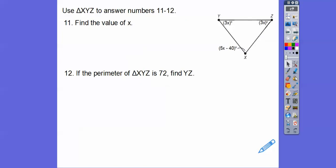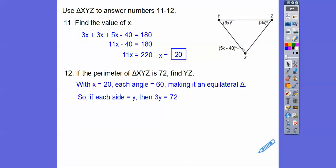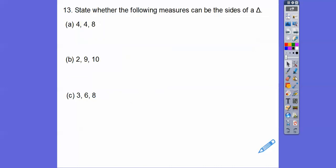Here we have another triangle, so add all those up to be 180. We get 11X plus 40 equals 180. So 11X equals 140, and X equals 20. If we plug in 20, 3 times 20 is 60. That's 60, so this has to be 60 also. It's an equiangular triangle, which means it's an equilateral triangle. If all the sides are equal, Y plus Y plus Y equals 72. So 3Y equals 72, Y equals 24. So that's what YZ is - all sides are 24.